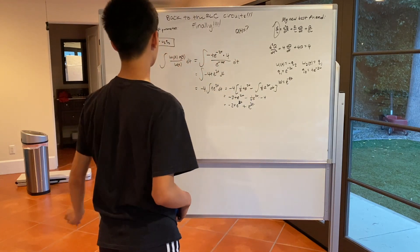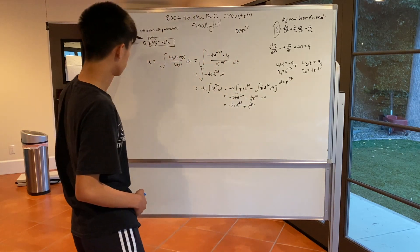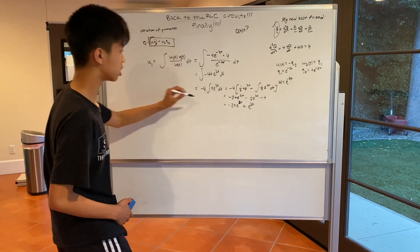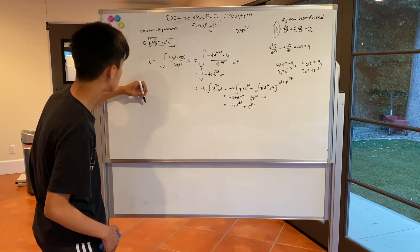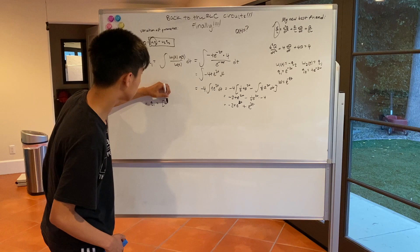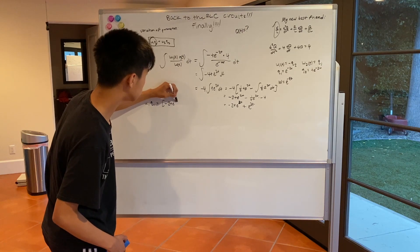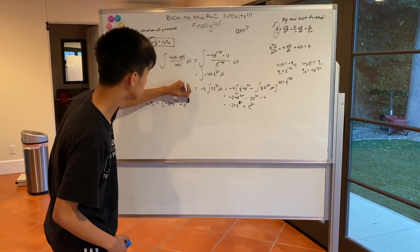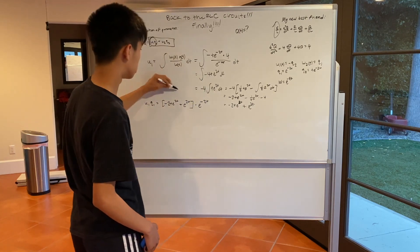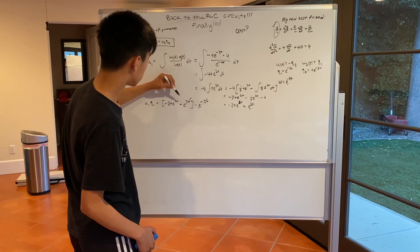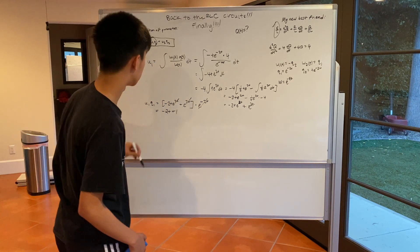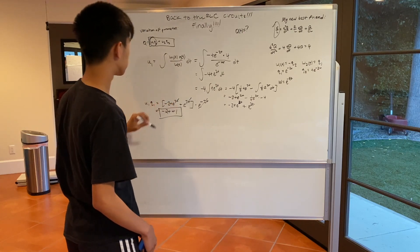So, this is our U, but then remember, in the solution, you also need to multiply by Q1. So, let's multiply this by Q1. So U1 Q1 is just equal to U1, which is negative 2t e to the 2t power, plus e to the 2t power, times e to the negative 2t. So all the e to the t's cancel out, and you're just left with negative 2t plus 1. So that is our first solution.